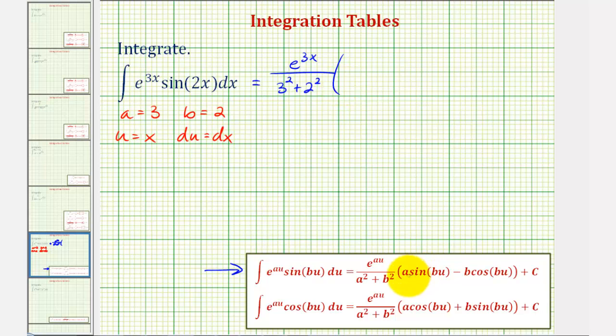Times the quantity a sine bu, which should be 3 sine 2x, minus b cosine bu, that would be minus 2 cosine 2x, and then plus c.